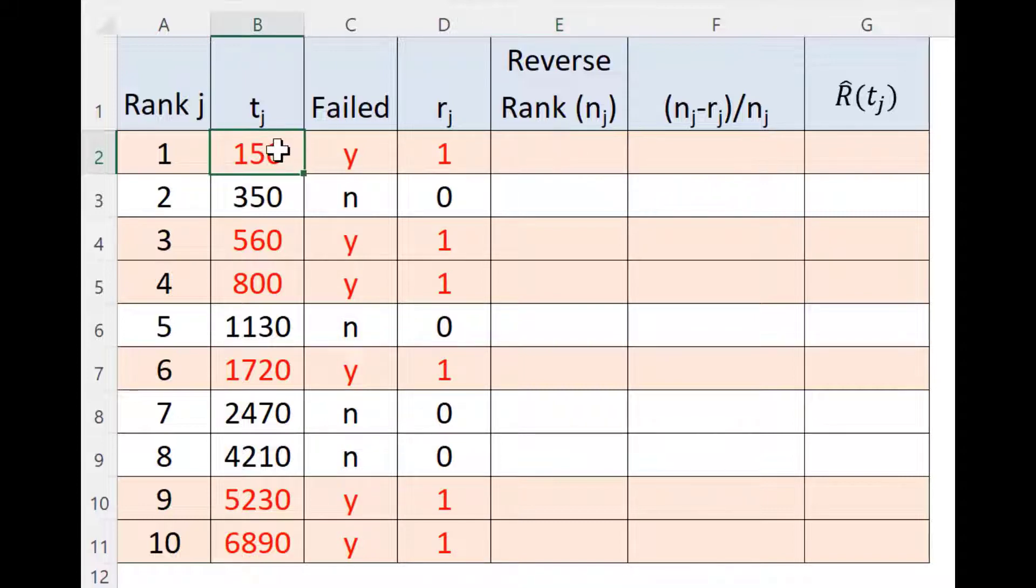The reverse rank nj can be considered as the number of components under risk just prior to that tj time. So just prior to 150, all 10 components are under risk. So I put 10. At 350, since one component has failed, 9 are under risk. So it can be represented with reverse rank also.